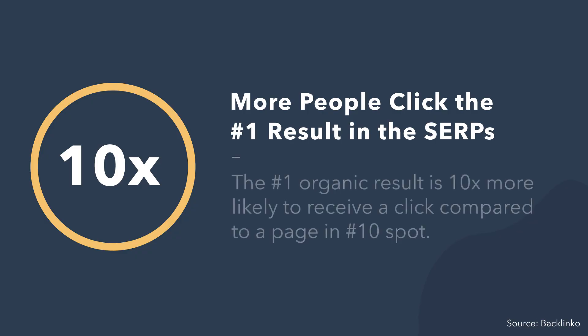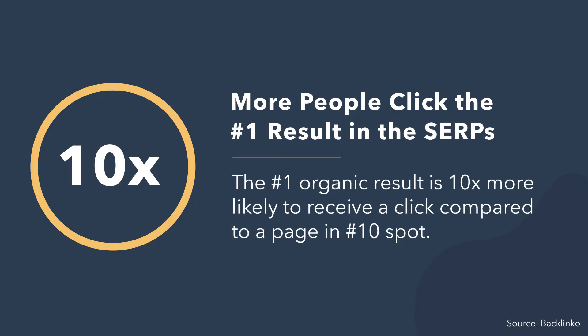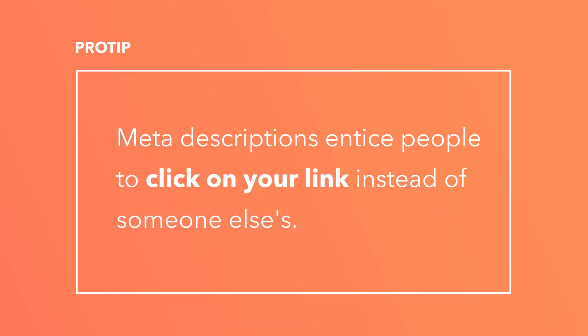There might be 10 links per search engine results page, but they don't all get clicked equally. In fact, people are more likely to click results that are higher up on the page. For example, the number one organic result spot is 10 times more likely to receive a click than the number 10 spot. To get your result to rank well, however, you need people to start clicking on it. Meta descriptions entice people to click on your link instead of someone else's. Great meta descriptions can be powerful enough to get people to click on your link, even if you are below another search result.